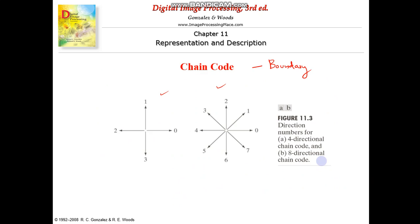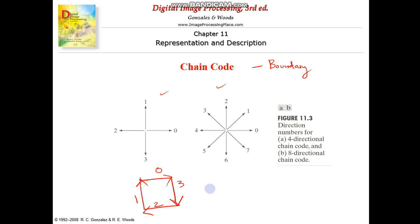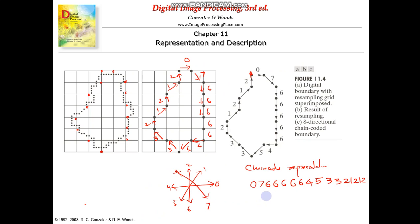As an example of chain code direction, if we have a square and this is the starting point on the grid, the chain code would be: 0, 3, 2, 1. This is a very simple boundary representation using chain code. That covers both four-directional and eight-directional chain code. That's all about chain code — thank you for listening.